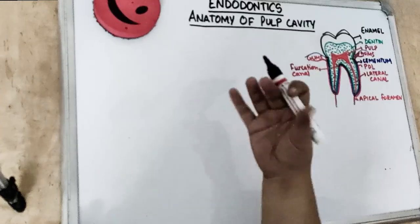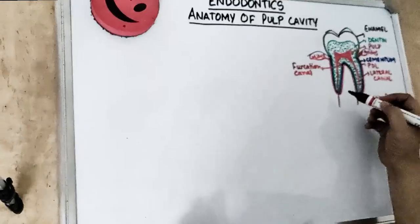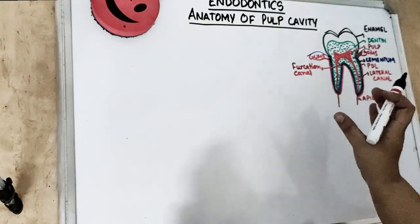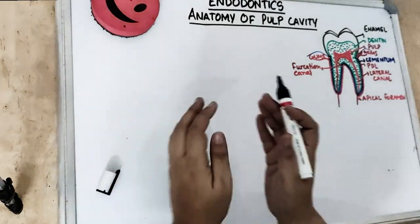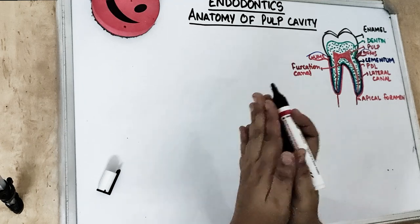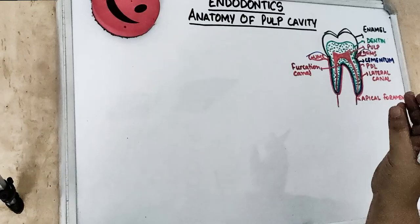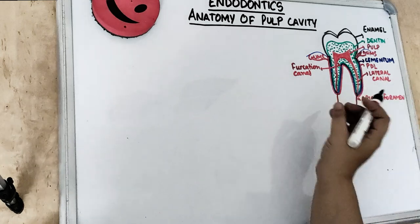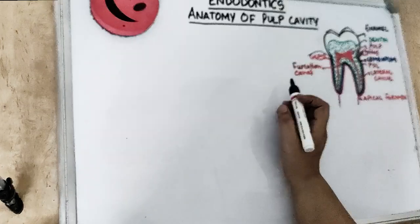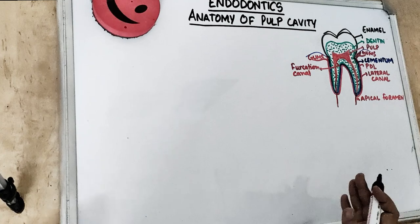Starting with the anatomy of the pulp cavity: what is a pulp? Pulp is a soft tissue — basically the red part which contains the nerves and the vessels. It is the soft tissue of the mesenchymal origin which is residing within the pulp cavity.